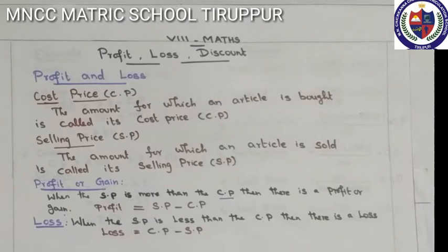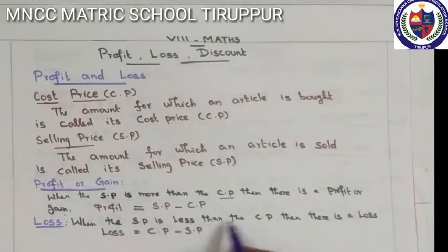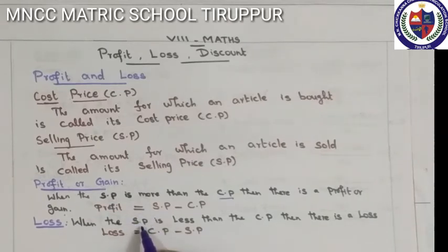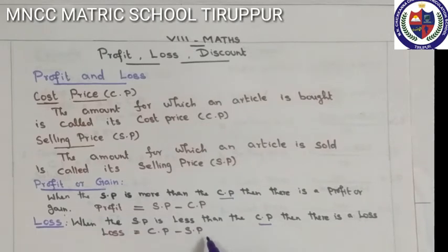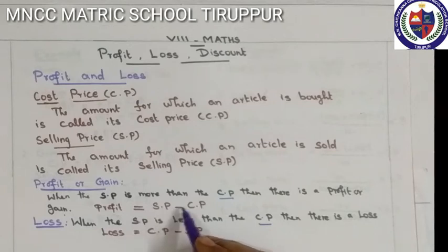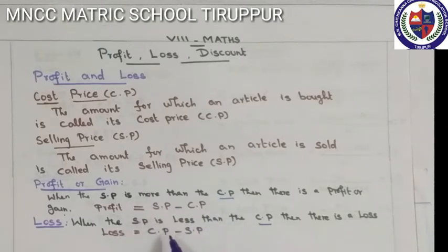Loss: when the Selling Price is less than the Cost Price, then there is a Loss. The formula: Loss equals Cost Price minus Selling Price.